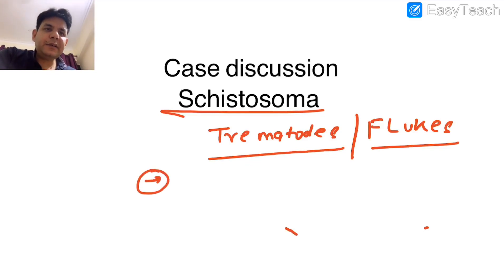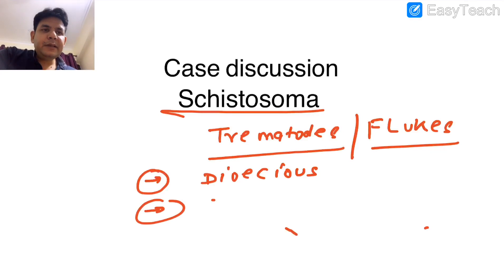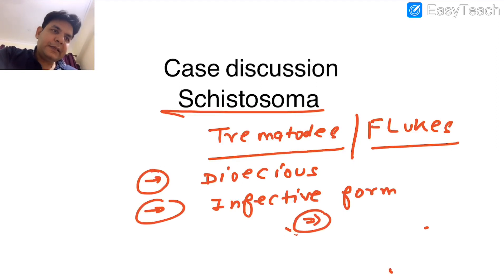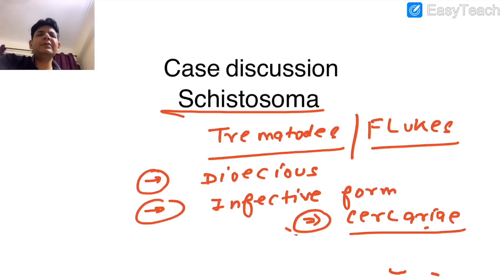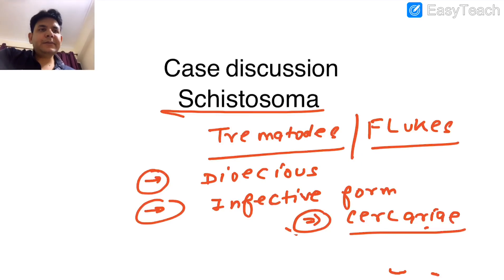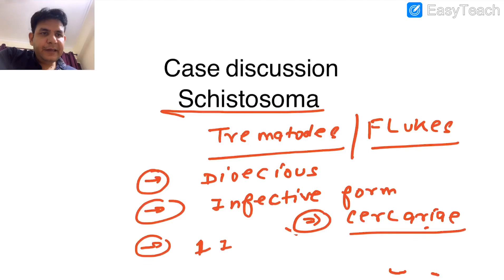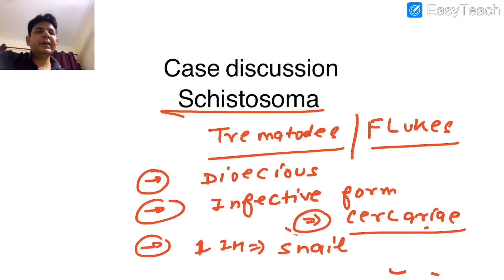First, schistosomes are dioecious — they have separate male and female individuals. Second, the infective form for schistosomes is cercaria. Third, they have only a single intermediate host, which is the snail.